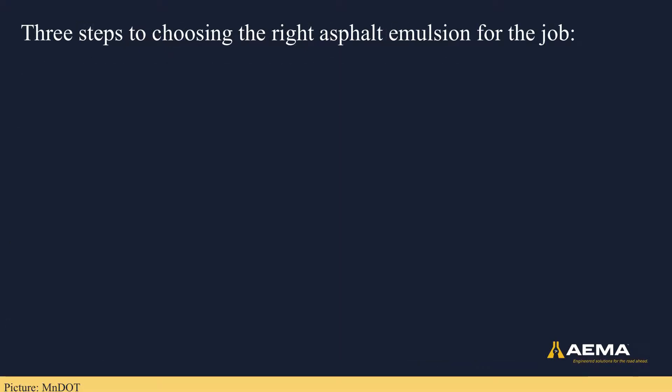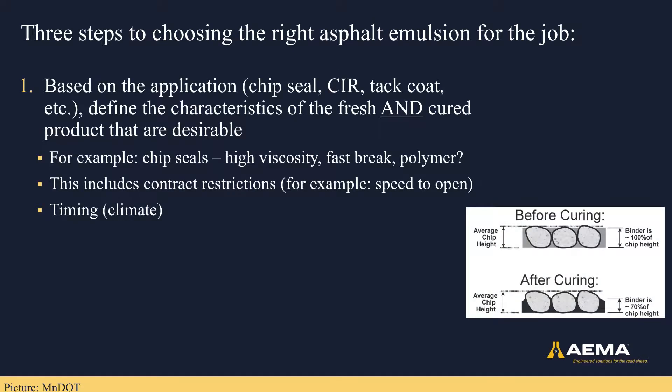There are three basic steps to selecting the right asphalt emulsion for any job or process. The first is to define the characteristics, or performance measures, that are desirable in the fresh and cured treatment. Take for example chip seals, or seal coats as they are called in some areas. Chip seals consist of a thin layer of asphalt emulsion sprayed onto an existing pavement surface, then covered by a uniform layer of aggregate chips. Since we need to ensure that the emulsion does not run off the pavement before chips can be embedded, and a thick film holding the chips in place is required, a high viscosity emulsion is selected. We also want a rapid set or cure to lock the aggregate chips in and expedite the maintenance process.